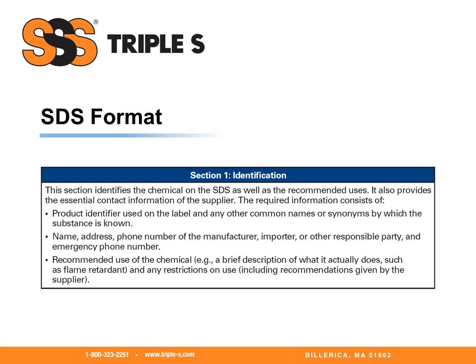Now let's take a look at each section individually. Section one, identification, will include the product identifier, which is the product name and code, the name of the manufacturer, distributor, and address and phone numbers, emergency phone numbers, recommended uses, and restrictions on use.